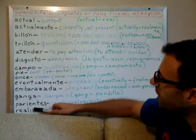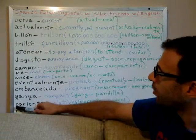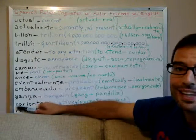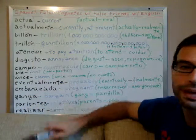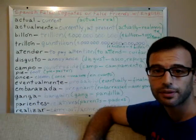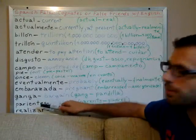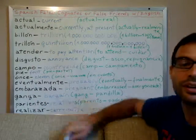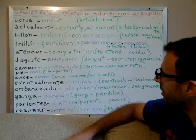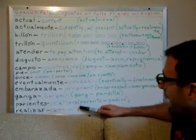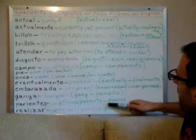And this is one of the most typical false friends: the word 'parientes.' 'Parientes' does not mean 'parents' — 'parientes' means 'relatives.' So what does the word 'parents' mean? 'Parents' means 'padres' in Spanish.